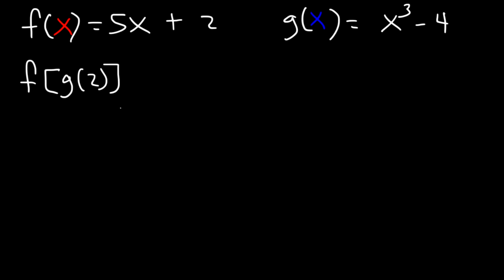How can we do so? First, let's find the value of g of 2. Let's replace x with 2. This is going to be 2 raised to the third power minus 4. 2 times 2 times 2 is 8. 8 minus 4 is 4. So g of 2 is 4.